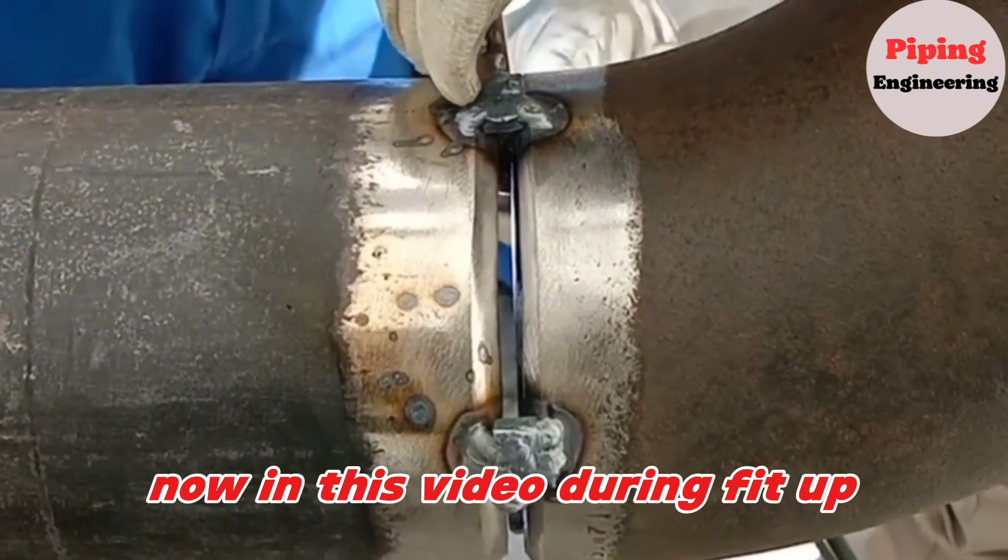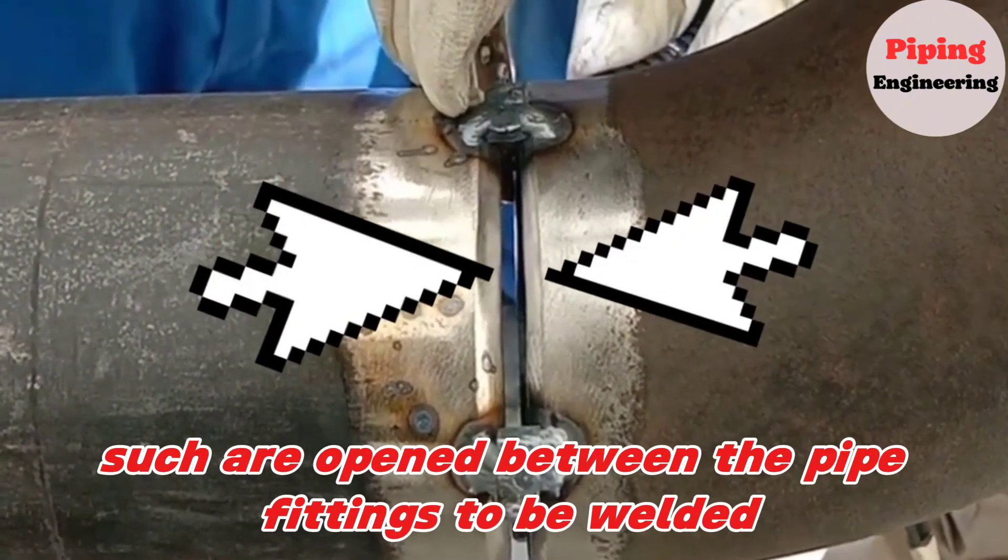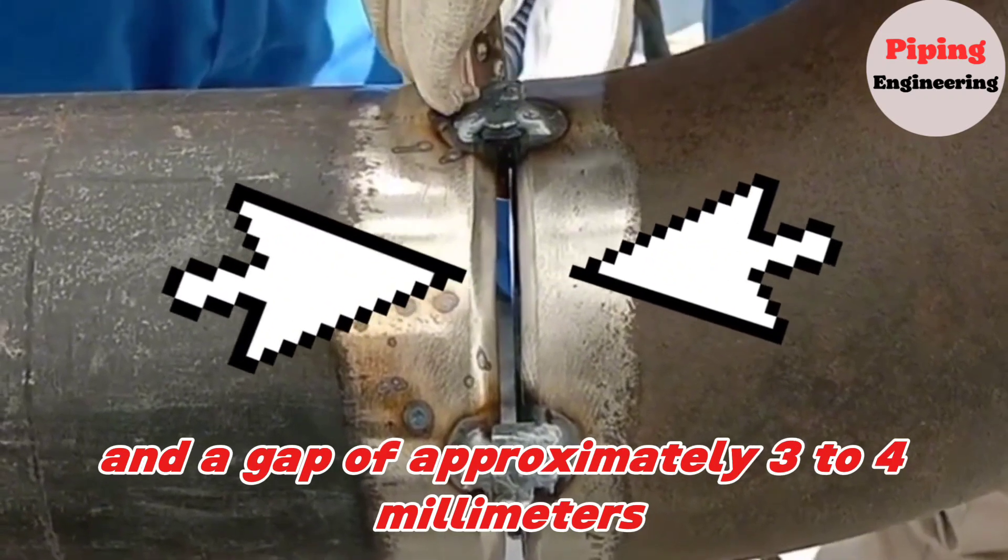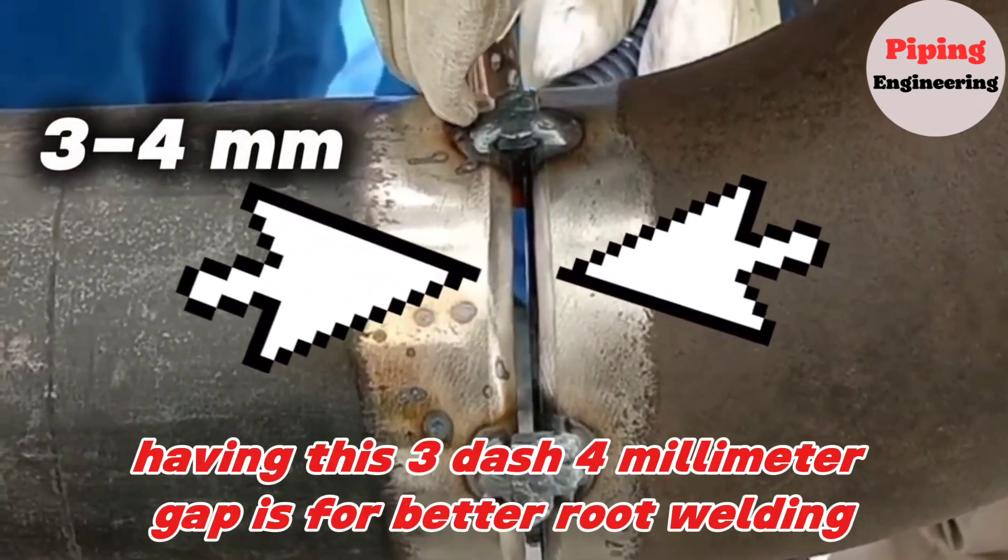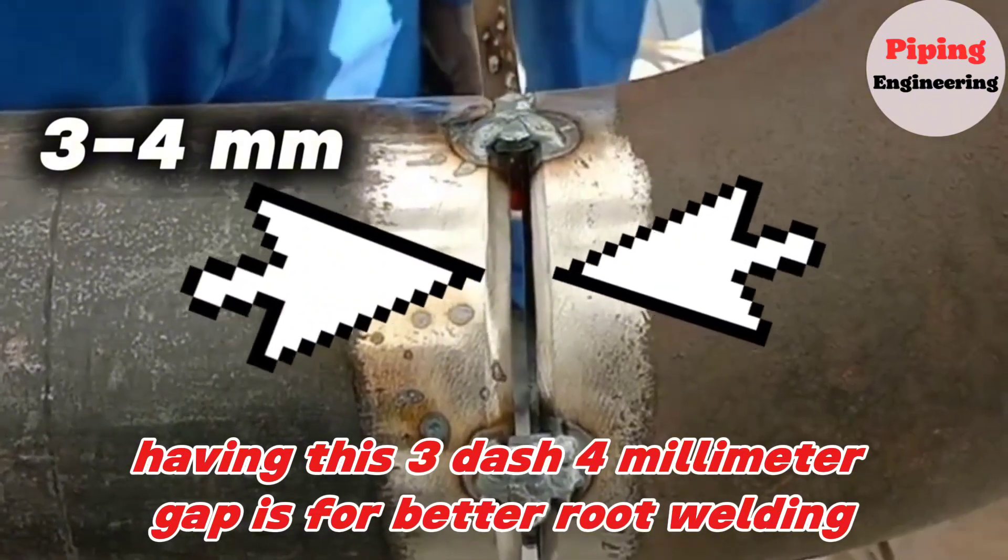During fit-up, a gap of approximately 3 to 4 millimeters is opened between the pipe fittings to be welded. Having this 3 to 4 millimeter gap is for better root welding.